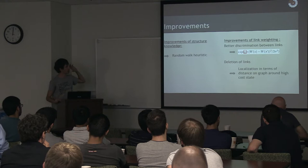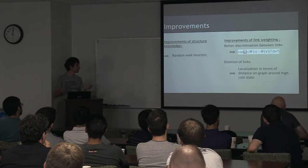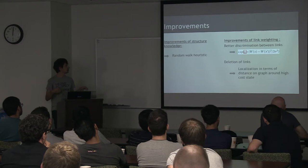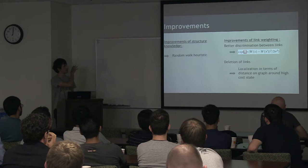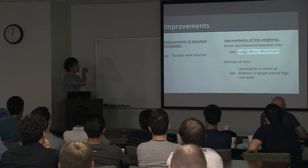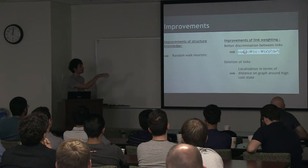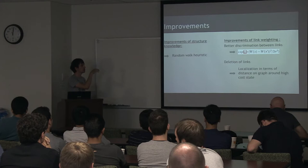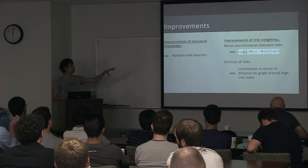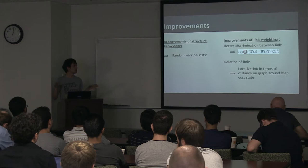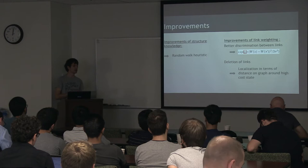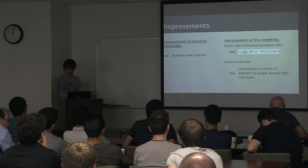What I presented you before about the construction of the similarity graph is a basic way to construct the similarity graph, but during my work I did some improvements. For example, I told you that I use an estimator of the value function, which I call W in the previous slide, and I replace this estimator by a new one based on a random walk heuristic. I also slightly changed the weight formula. I add a coefficient to have a better discrimination between nodes. And finally, I delete some links in the similarity graph to have some kind of localization in terms of distance on graph around ICOS state.